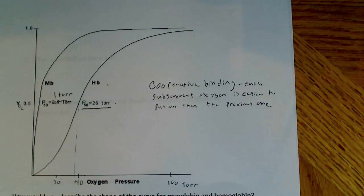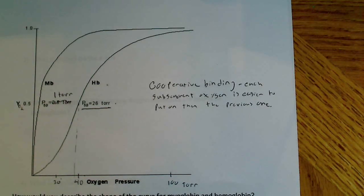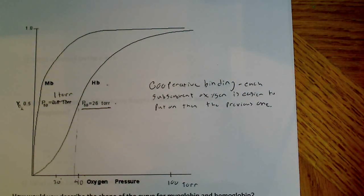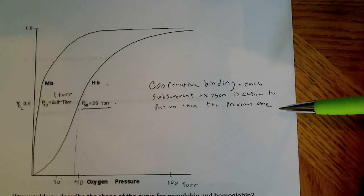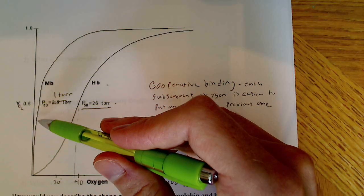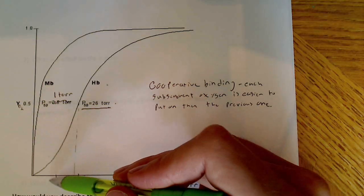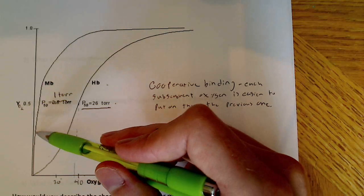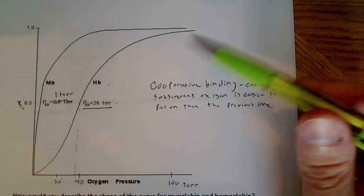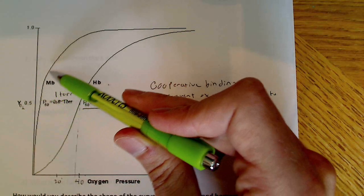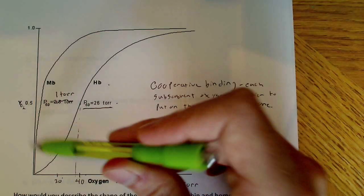In the last video I was talking about the oxygen binding curve for hemoglobin and myoglobin. Hemoglobin has this cooperative binding where each subsequent oxygen is easier to put on than the previous one. Whereas myoglobin has this hyperbolic curve and it's binding oxygen really tightly even at very low pressure. Myoglobin has a different function than hemoglobin — the purposes are different — and that's why you see this hyperbolic curve.